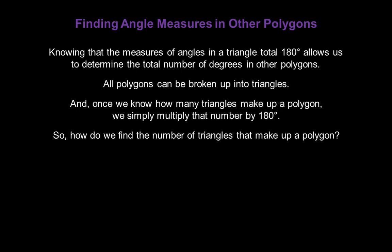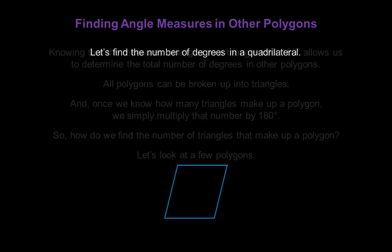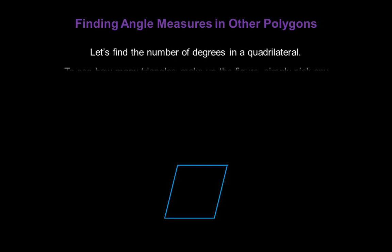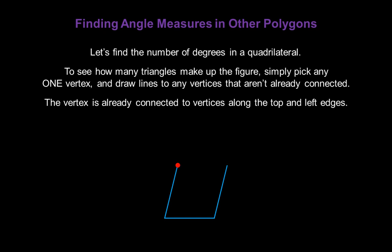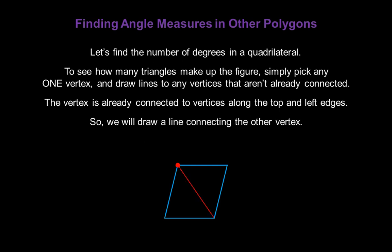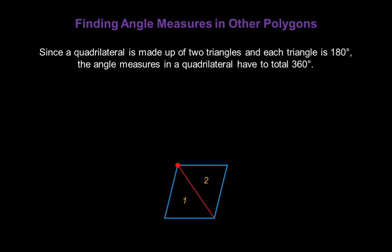To find the number of triangles that make up a polygon, let's look at a few examples. For a quadrilateral, pick any one vertex — the upper left-hand corner — and draw lines to any vertices that aren't already connected to it. The vertex is already connected along the top and left edges, so we draw just one additional line, creating two triangles. Since a quadrilateral is made up of two triangles and each triangle is 180 degrees, the angles in a quadrilateral total 360 degrees.